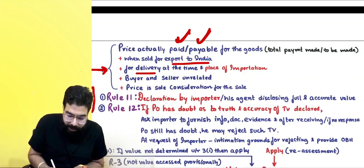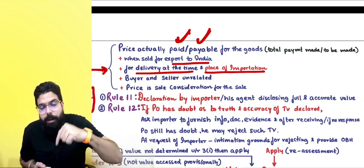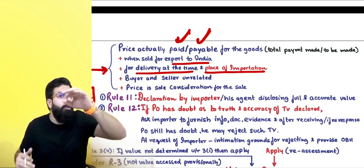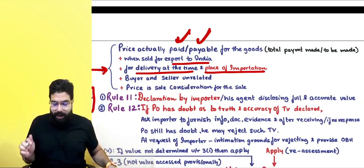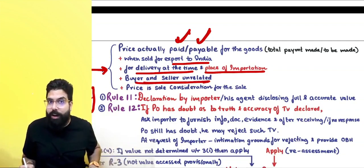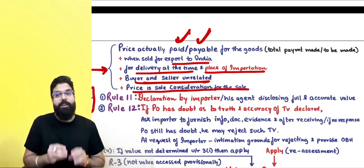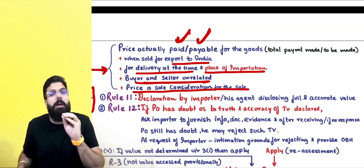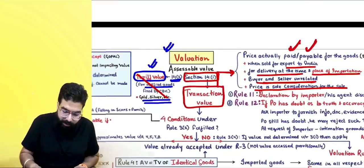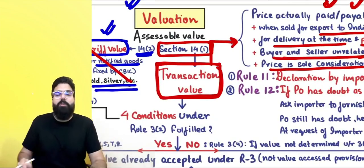Transaction value is the price actually paid or payable for goods when goods are sold for export to India for delivery at the time and place of importation — basically up to the Indian port, which is the CIF value. This applies when the buyer and seller are unrelated and price is the sole consideration — meaning you paid only money.